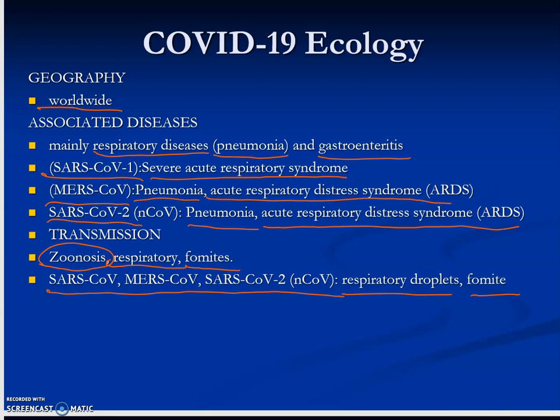COVID-19 is easily transmitted from person to person. It is also a zoonosis, meaning it can be transmitted between animals and humans — which is rare for viruses normally, but coronaviruses are notorious for being able to do that. Transmission occurs via respiratory droplets such as sneezing and coughing, and via fomites — inanimate objects that someone touched or sneezed on. You touch the object, get the virus on your hands, touch your face, and the virus enters through portals like the eyes, nose, or mouth. SARS-CoV, MERS-CoV, and SARS-CoV-2 all transmit primarily via respiratory droplets and fomites.